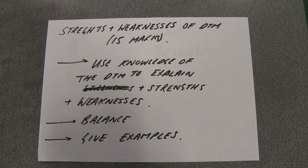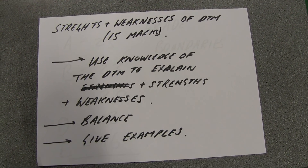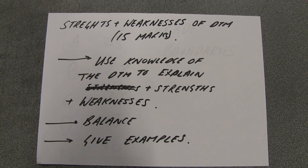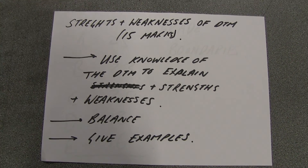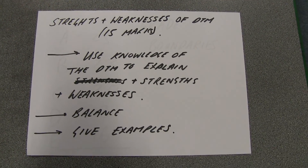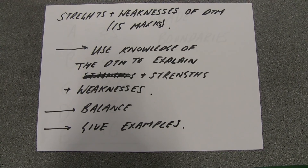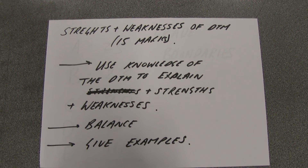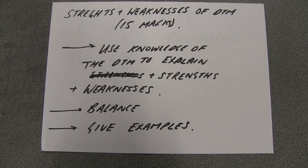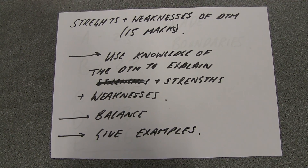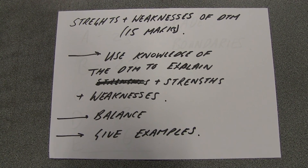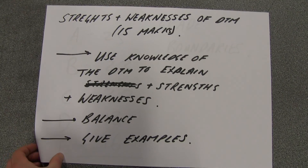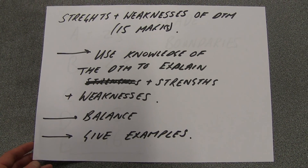Right, then we get to the strengths and weaknesses of the demographic transition model. This showed me that lots of people have good knowledge of what the strengths and weaknesses are, however most people just listed them. You need to start providing examples and linking the demographic transition model into it. For example, if you said the role of governments is a weakness because it's not included, talk about China's one child policy and how that might have an influence. If you're talking about it being Eurocentric, explain how it works for us but how it might not work for an African country because of development aid. Giving examples is crucial.